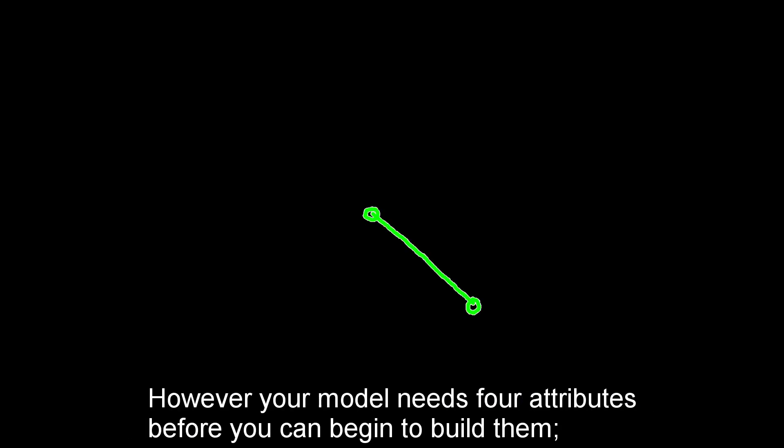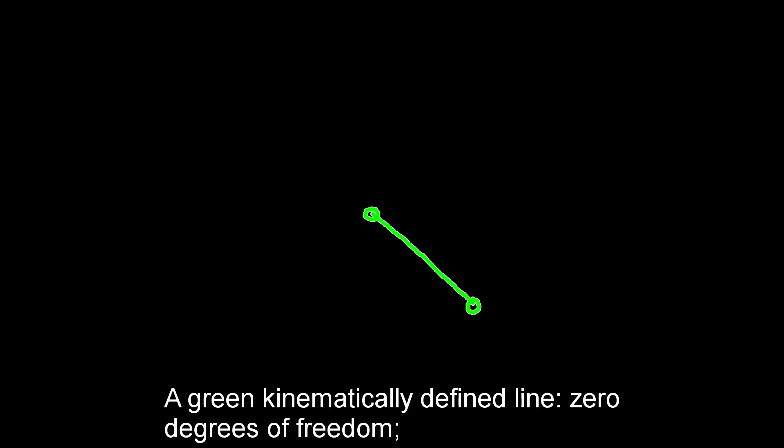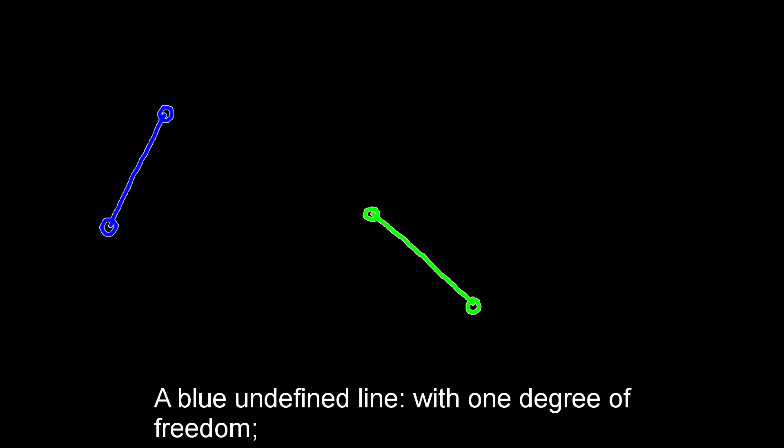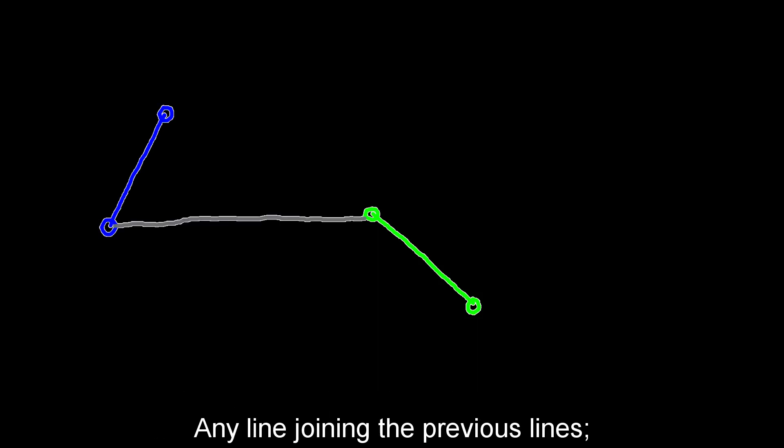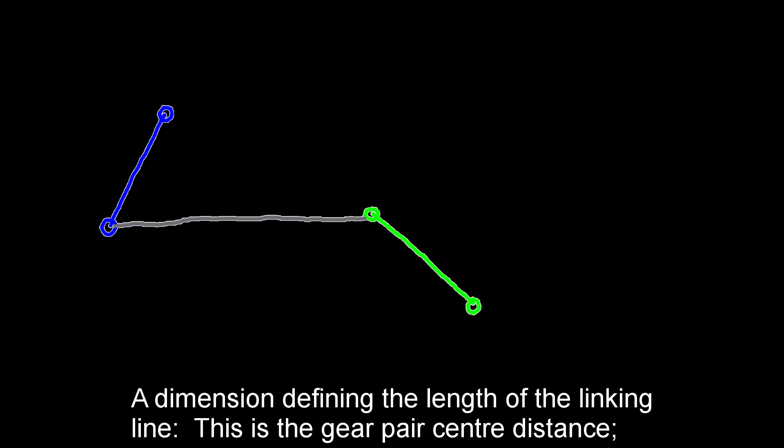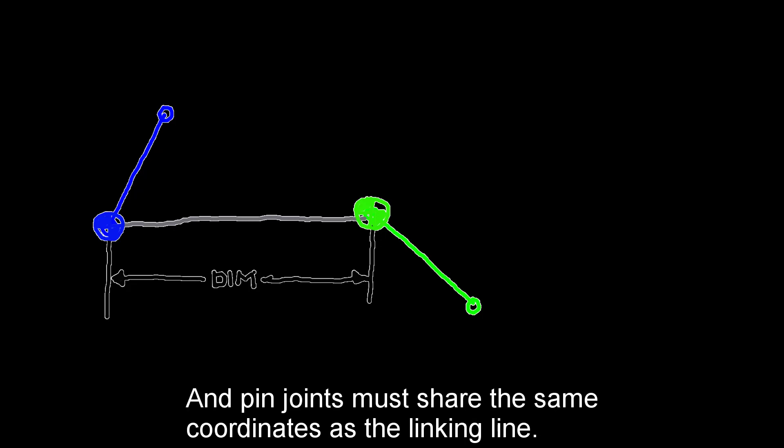However, your model needs four attributes before you can begin to build them. A green kinematically defined line with zero degrees of freedom, a blue undefined line with one degree of freedom, any line joining the previous lines, a dimension defining the length of the linking line—this is the gear pair centre distance—and pin joints must share the same coordinates as the linking line.